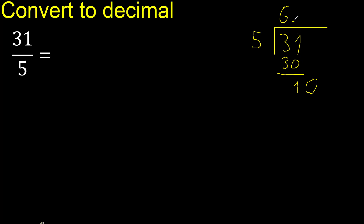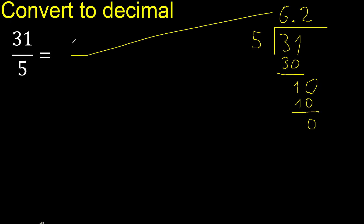0 point, 0 point — bring down to make 10. 5 multiplied by 2 is 10. Exact. 10 minus 10 is 0, therefore finish.